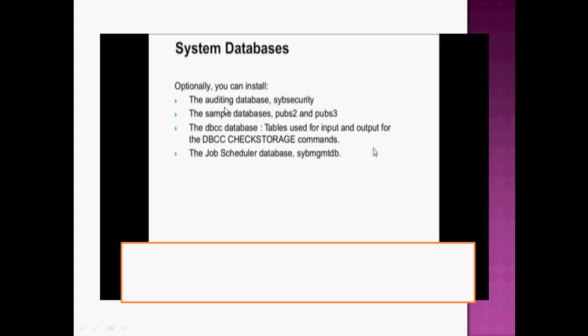The auditing database provides security to the user and data — it ensures stored data cannot be accessed or operated on by unauthorized persons. The sample database includes pushb and pushtree, used for processing operations. The DDCB database allows use of tables for input and output and creating new databases. The job scheduler database is used for scheduling jobs and operations in the operating system or Sybase database system.